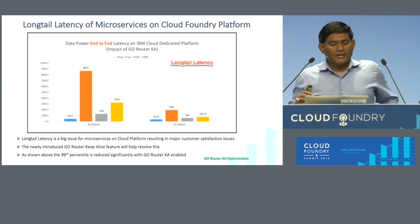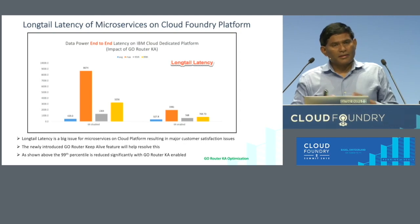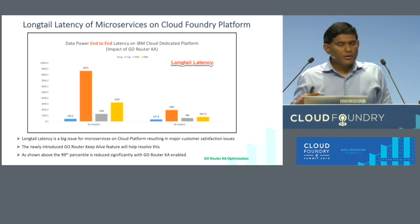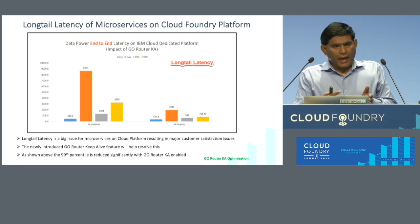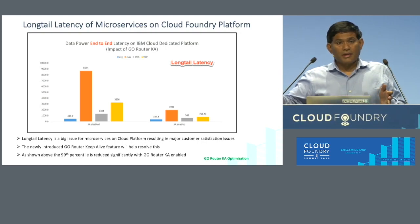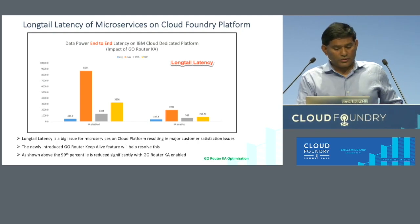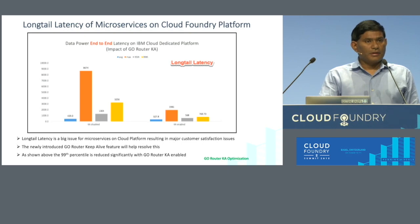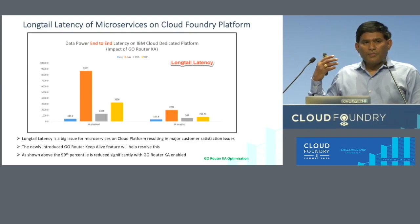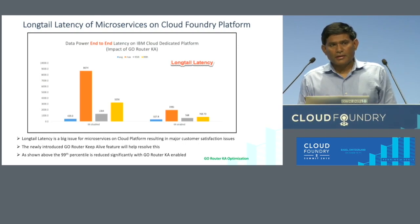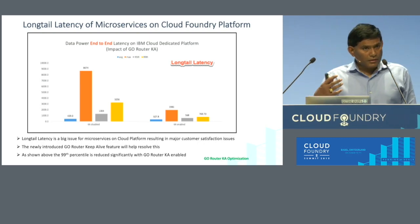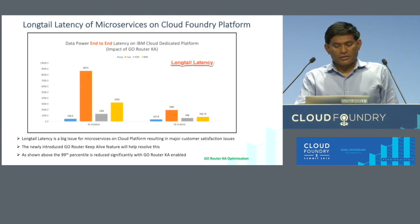You can see the long-tail latency issue here. We ran a healthcare application and observed this. Long-tail latency is the gap between average response time and the 99th percentile. If that gap is significantly higher — as you can see, the max latency and 99th percentile is much higher than average response time — that's mainly because of the GoRouter's inability to maintain keep-alive connections to the backend. Once you enable that feature — it's not on by default — you can significantly reduce long-tail latency.